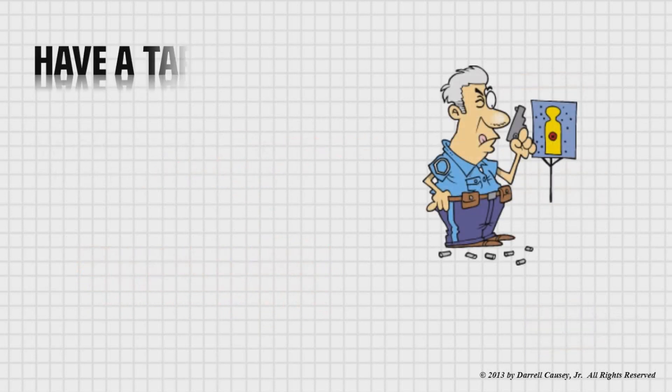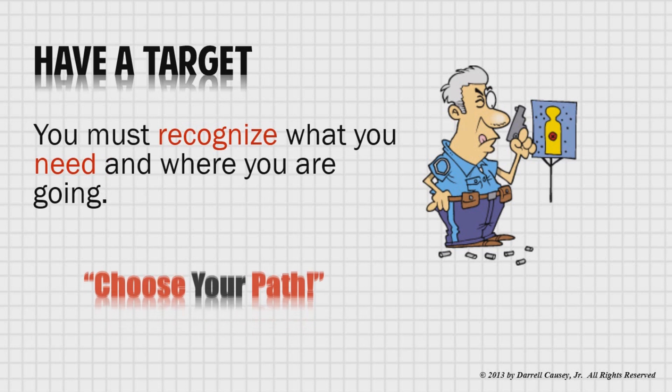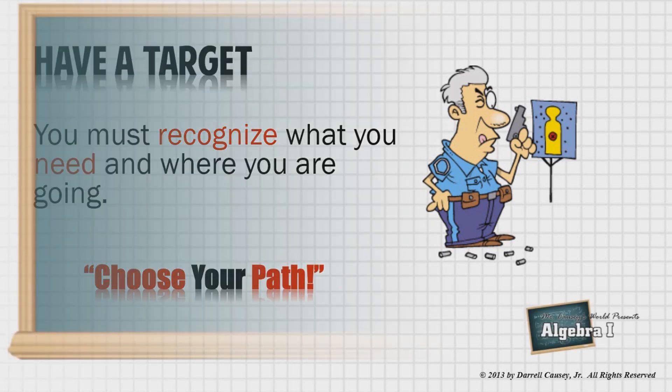One of the most important things now that you need to do when you are solving equations and working with equations is you must have a target. You must know where you're going. You must know your goal. So you must recognize what you need and where you're going. You must be able to choose your path. All right. Let's go to the blackboard and begin learning how to manipulate or solve equations.